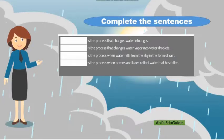Now you can complete the activity. Fill in the blanks. Blank is the process that changes water into gas. Blank is the process that changes water vapor into water droplets. Blank is the process when water falls from the sky in the form of rain. Blank is the process when oceans and lakes collect water that has fallen.